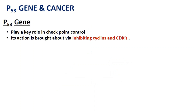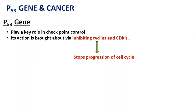The p53 gene plays a major role in checkpoint control. It has the ability to stop the cell cycle and comes into action when DNA damage is detected. What p53 does is inhibit the cyclins and CDKs, stopping the cell cycle, and then takes necessary precautions to either repair the DNA damage or destroy the cell.